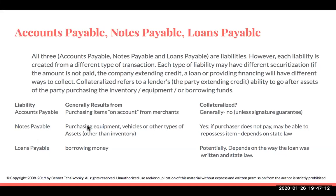Notes payable — for purchasing equipment, vehicles, or other assets other than inventory — if the purchaser does not pay, the party extending credit may be able to repossess the item, depending upon state law. A loan payable is for borrowing money, and this depends on how that loan was written. Another type of liability not covered here is a mortgage payable, which usually refers to a loan against a particular property.